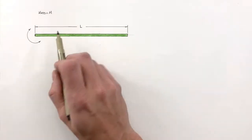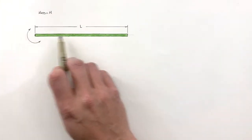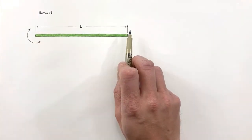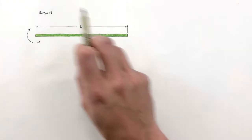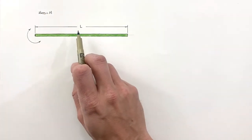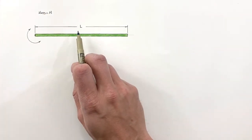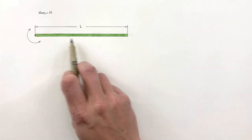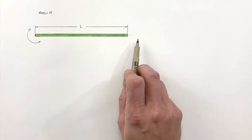So that's what we're going to derive here today. This rod has some total mass m and some length l, and given just these two variables we're going to come up with a function for the rotational moment of inertia of the entire rod.